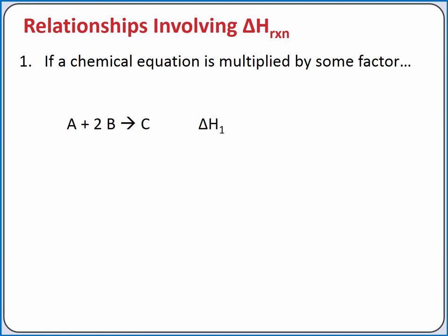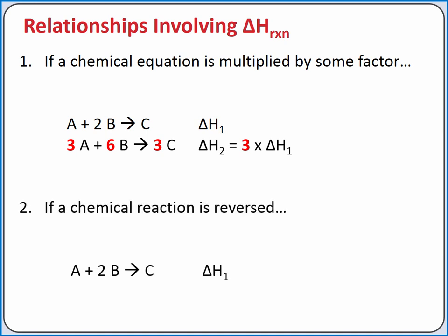The change in enthalpy for a reaction is given for the reaction as written according to the coefficients in the chemical equation. This is why we can use it as a conversion factor in dimensional analysis. If we multiply all of the coefficients in our equation by some factor, we also need to multiply the change in enthalpy by that same factor. Or if we reverse a chemical reaction, we change the sign on the change in enthalpy.